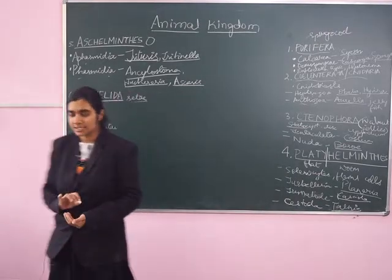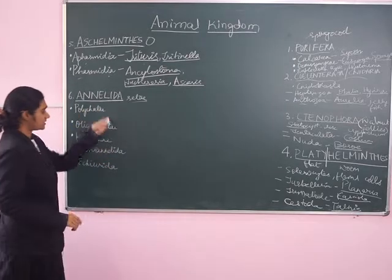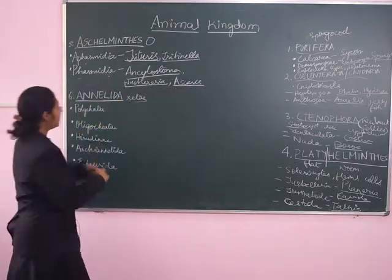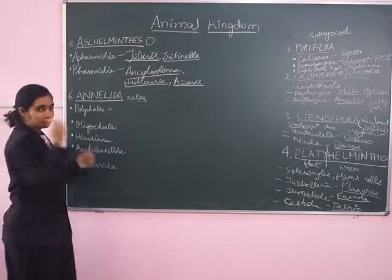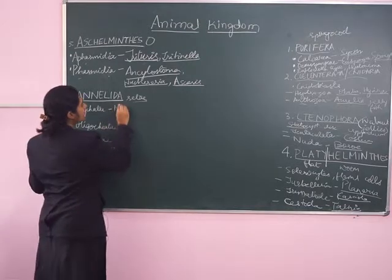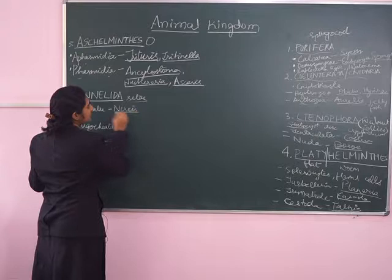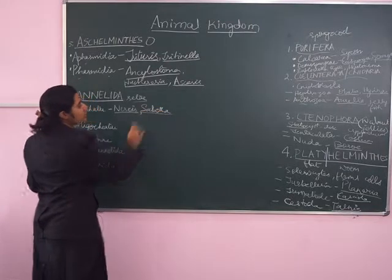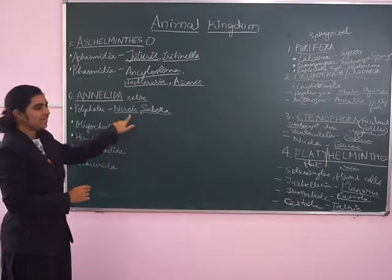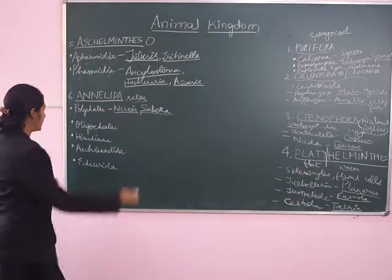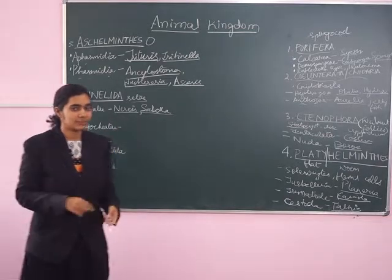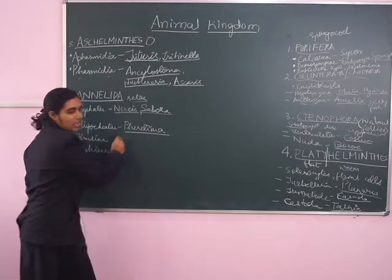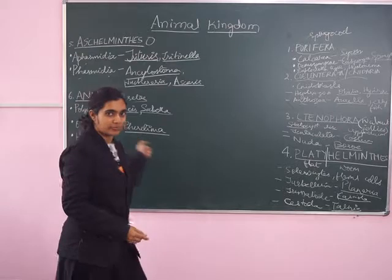Polychaeta are those which have many setae on the body. Examples include Nereis and Sabella — Sabella is also called the peacock worm and is a sea-dwelling worm. Oligochaeta have only a few setae on the outside of the body. The classic example is Pheretima — Pheretima posthuma, the classic earthworm, also known as the farmer's friend.